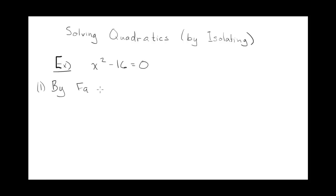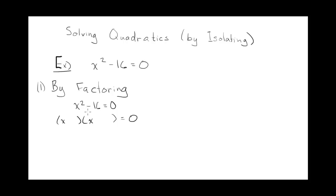So we'll call this Method 1. x squared minus 16 equals 0, and you would factor this as a difference of squares — difference because it's a minus, and these are both squares. The first term would be x and the second term would be the square root of 16, which is 4. One would be positive, one would be negative. This times this equals 0, which means one of them is 0. So x plus 4 equals 0, or x minus 4 equals 0.